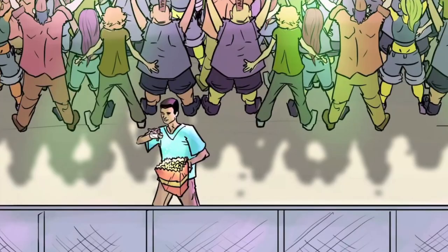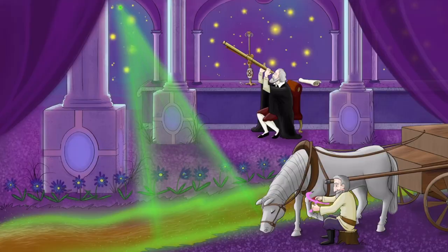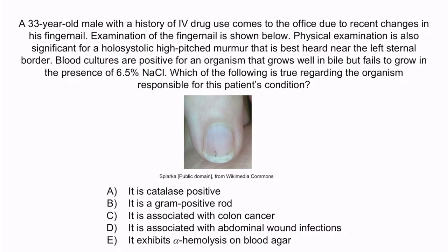In our video on Enterococcus, we represent growth in sodium chloride with a guy pouring salt on his popcorn. However, we haven't included anything like that in this image, so the absence of salt should clue you in to the fact that Streptococcus gallolyticus does not grow well in the presence of 6.5% sodium chloride. With this in mind, the correct answer is C — it is associated with colon cancer.